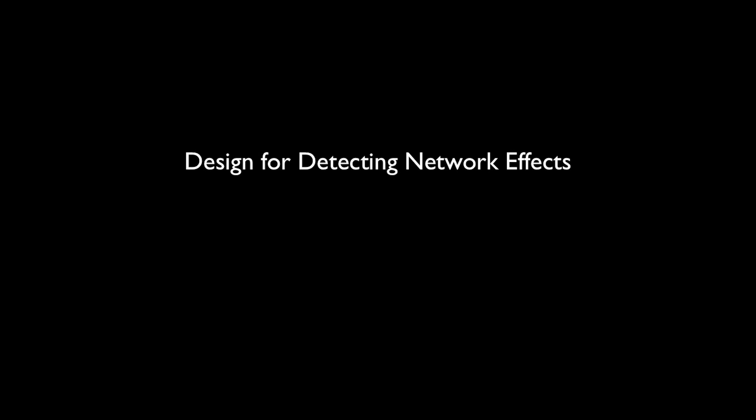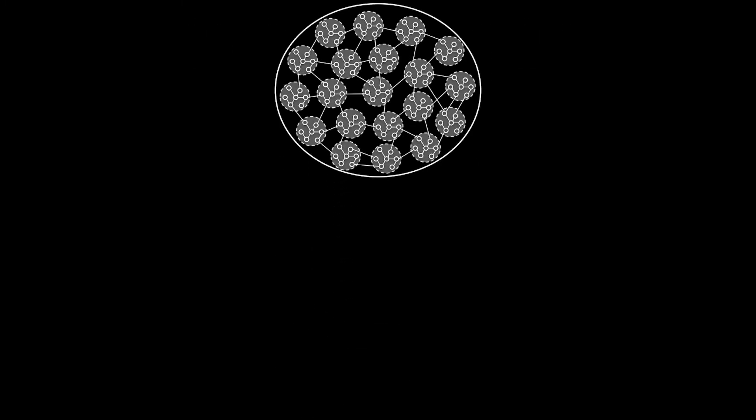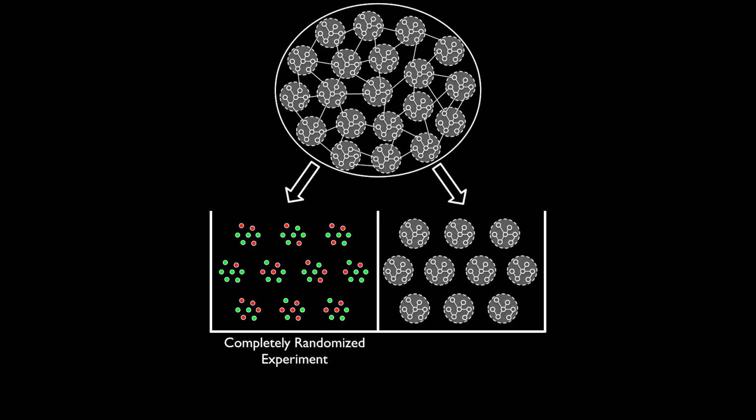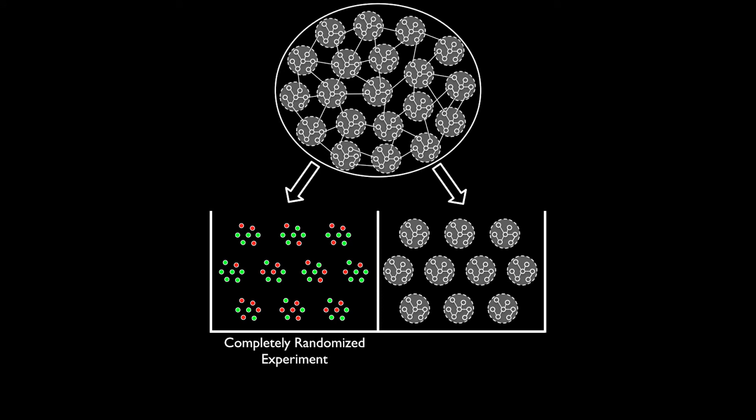In this paper, we propose an experimental design that allows us to detect network effects without making any assumptions about how treatment effects may spill over from the treatment to the control group. Here is how it works. We first find clusters of densely connected users, and we divide them into two buckets. In the first bucket, we run a completely randomized experiment, and in the second bucket, we run a cluster-based randomized experiment.